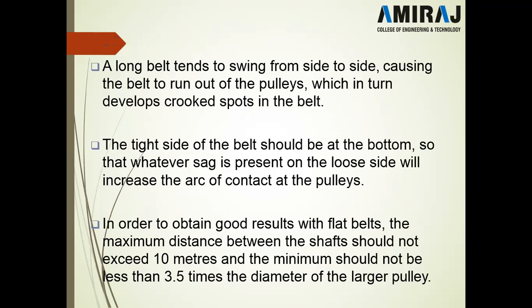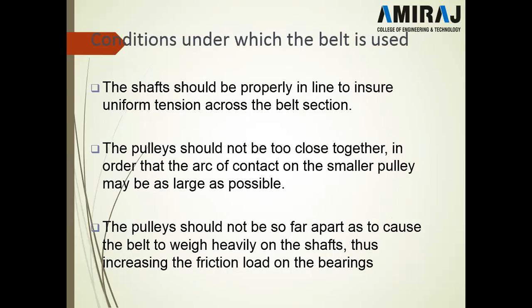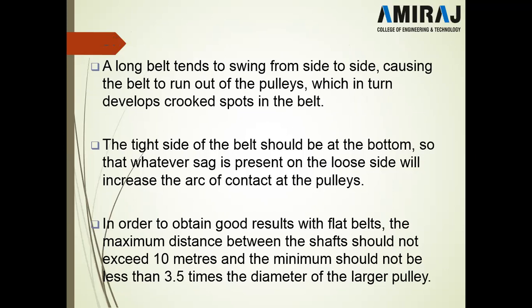A long belt tends to swing from side to side, causing the belt to run out of the pulley, which in turn develops worn spots in the belt. So the pulleys should not be at maximum distance — first reason is increasing friction load on bearings, and second reason is that a long belt swings side to side causing the belt to run out of the pulley and developing worn spots.